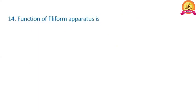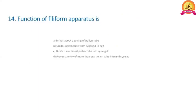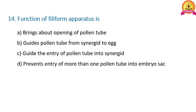Next: what is the function of the filiform apparatus? Option A — it brings about opening of the pollen tube — is wrong. Option B — it guides the pollen tube from synergid to egg — is also wrong. Option C — it helps in guiding the entry of the pollen tube into the synergid — is the correct statement. Option D — it prevents entry of more than one pollen tube into the embryo sac — is also wrong. Option C is correct.